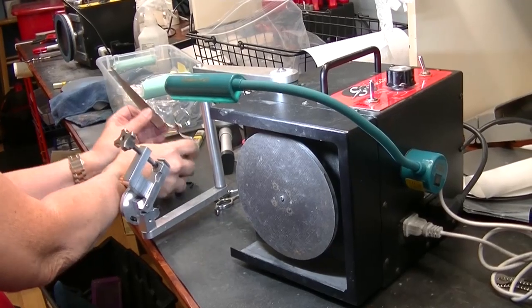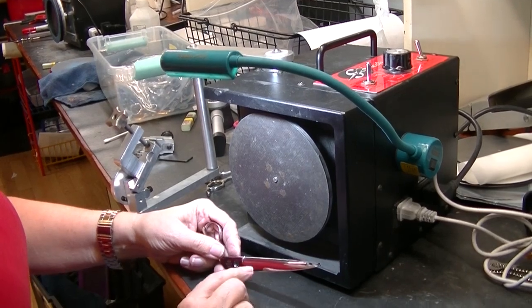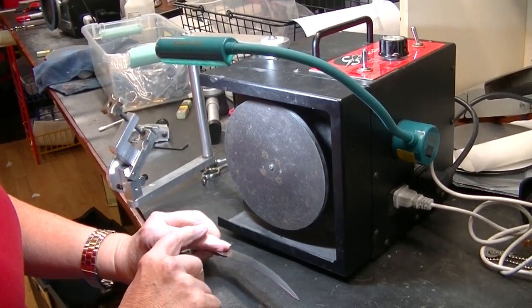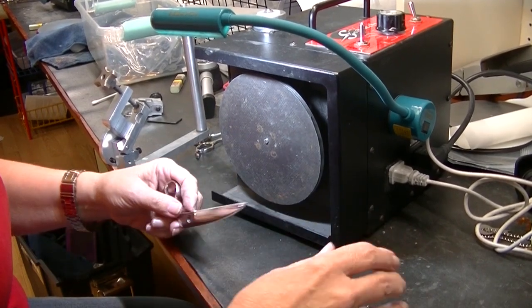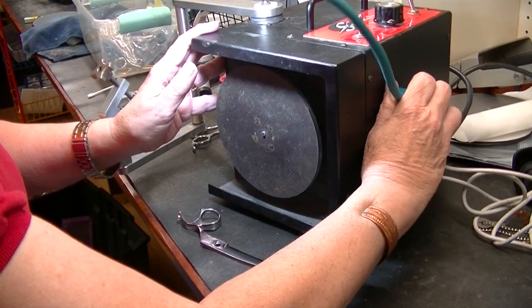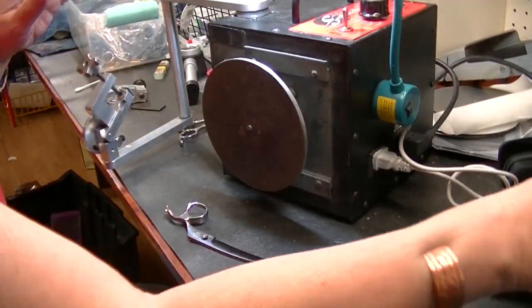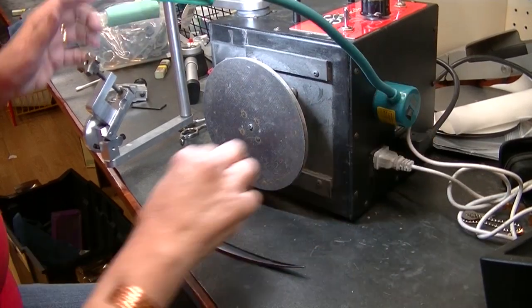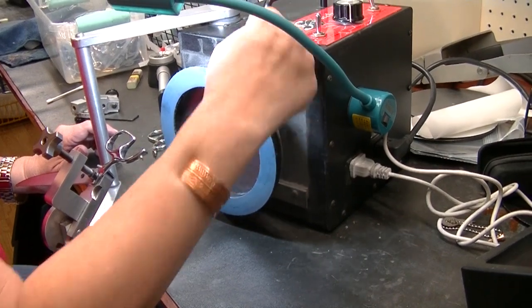One of the hardest shears ever designed for a sharpener to sharpen is the left-handed convex curve shear. You'll see this used by both barbers and pet groomers and even some hairstylists. Set up your machine in whatever proper way that you need to to do a left-handed shear. Put your shear firmly in the clamp.